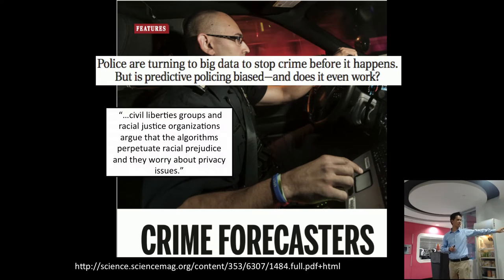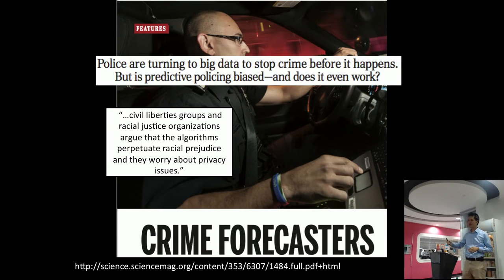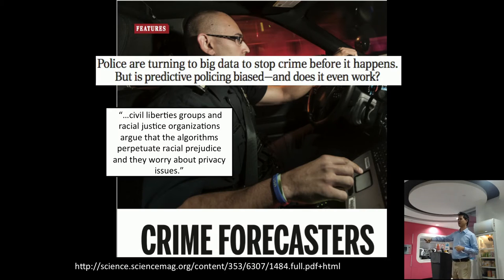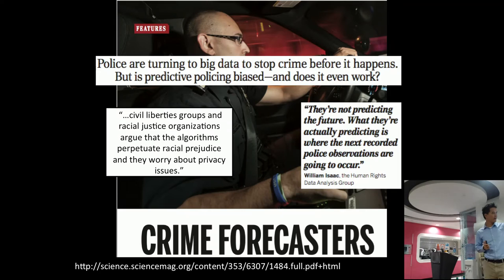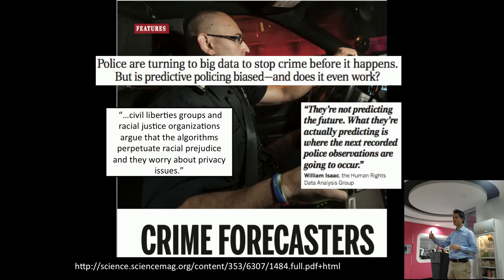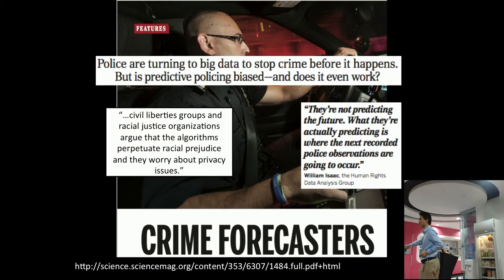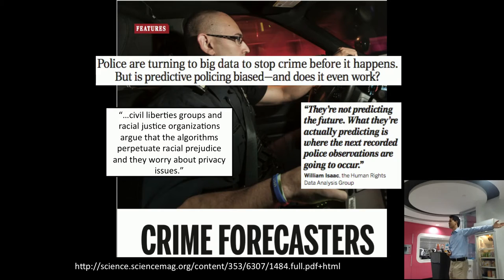Many civil liberties groups and racial justice organizations argue that these algorithms are perpetuating prejudice. Basically these algorithms, in the US, see that Black people are associated with a lot of crimes, so they target even more Black people — doing racial discrimination and pushing these things we don't want in society even further. And what's even worse is that what they find is they're not actually predicting the future — what they're actually predicting is where the next recorded police observations will be. Because the police are the ones recording the data. So if I were a criminal, I'd use this software to know where the police are and cause crime somewhere else.